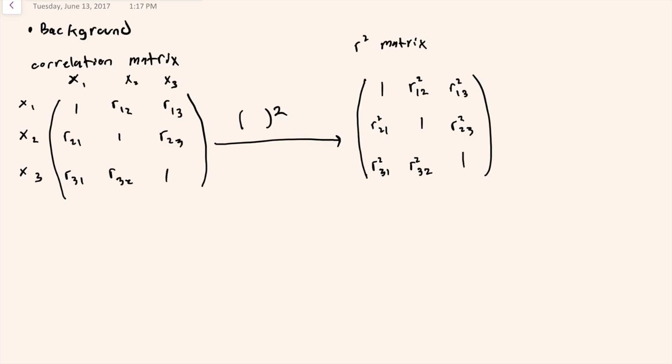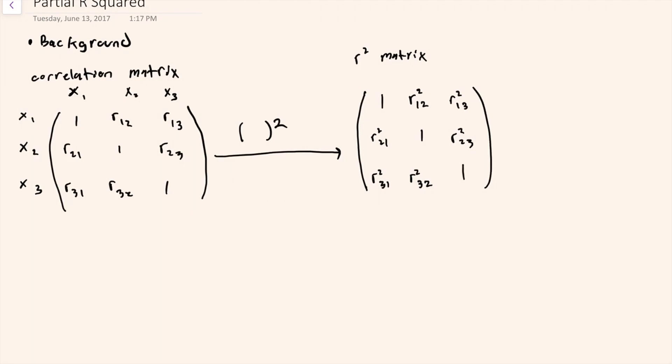These tables make up a great summary of the univariate relationships between these variables. But when we get into more complicated models, two additional kinds of correlation become relevant — and those are the part correlation, which I talked about in the last video, and the partial correlations and partial R-squares, which I'm going to talk about in this video. Here we're considering a model where we're estimating xi using an intercept, along with the estimate of a slope on one variable xj, and the estimate of another slope on an additional variable xk.